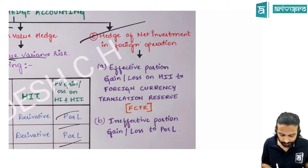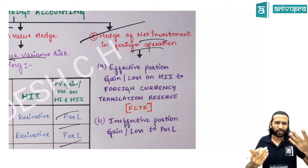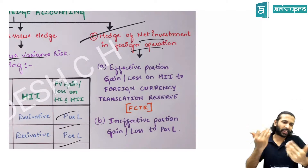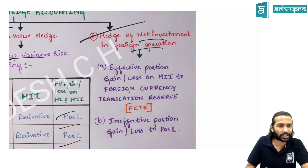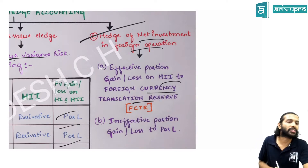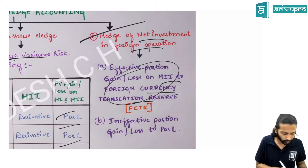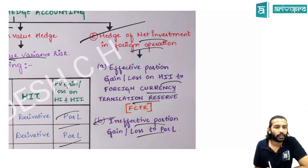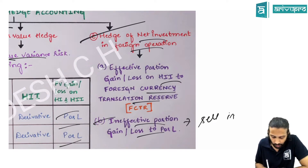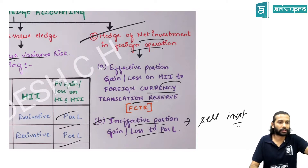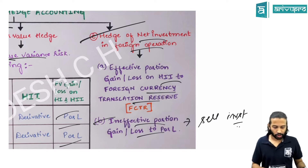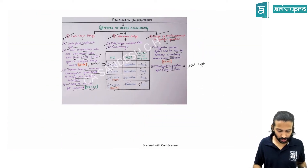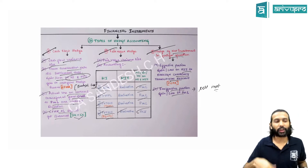Hedge of net investment in a foreign operation: covers risk from changes in the carrying value of a foreign subsidiary investment and dividend cash flows. Treatment is the same as cash flow hedge, except balances go to the foreign currency translation reserve (FCTR) instead of cash flow hedge reserve. When the foreign subsidiary is sold (fully or partially), the corresponding FCTR balance is transferred to P&L — ineffective portions go to P&L immediately.